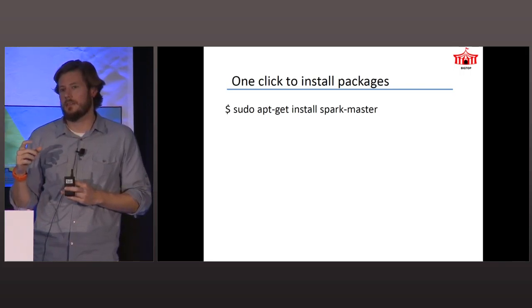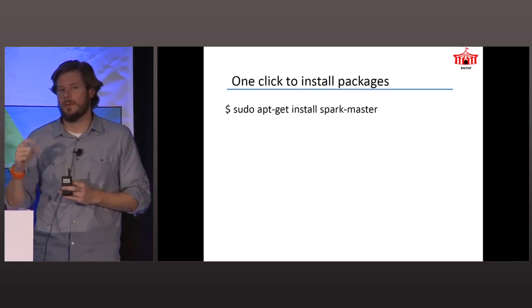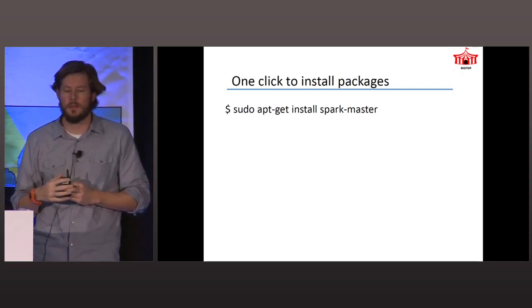You can also tell it to just build Spark for you. There are little definitions that say Spark depends on these other three things, and you can even create your own custom definitions if you're adding your own third-party components. So if you were going to build Spark, it would build the master and worker packages. At the end, if everything passes, it'll build and spit out — in this case — Debian packages, and it'll build a local host repository.